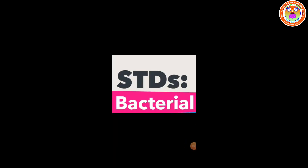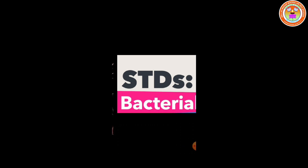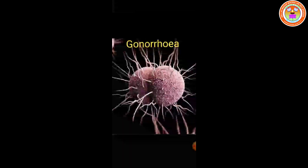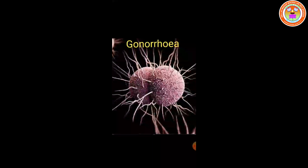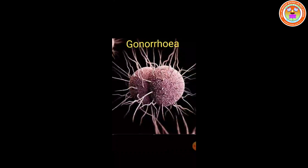Next, let us look at sexually transmitted diseases caused by bacteria and viruses. Sexually transmitted diseases caused by bacteria include gonorrhea and syphilis. Gonorrhea is caused by the bacterium Neisseria gonorrhoeae. Mode of transmission is sexual contact. The tissue or organ mainly affected is the urethra. Symptoms of gonorrhea include discharge from genital openings and pain during urination.